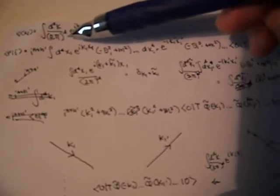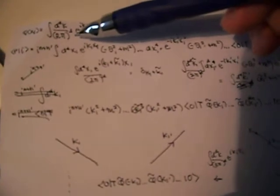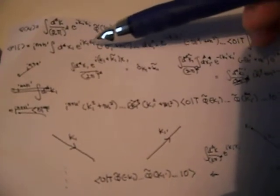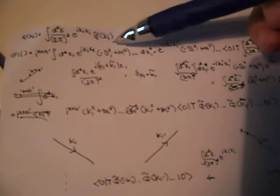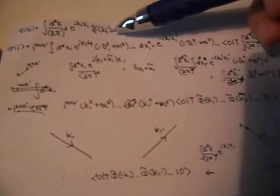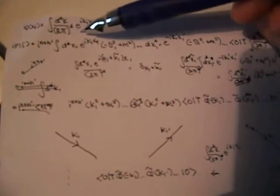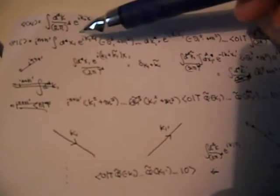Now this introduces kind of what people call an asymmetry in the Fourier transform because the other form of the Fourier transform going from position to momentum doesn't have this 2 pi. But we're going to roll with this.